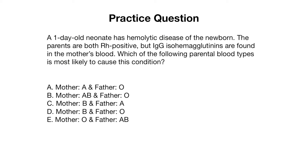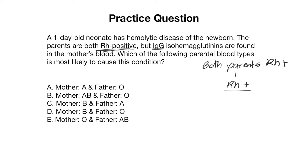Let's do a practice question. A one-day-old neonate has hemolytic disease of the newborn. The parents are both RH positive, but IgG is found in the mother's blood. Which of the following parental blood types is most likely to cause this condition? Since both parents are RH positive, the baby is going to be RH positive — so we are not dealing with RH incompatibility. Therefore we're dealing with ABO incompatibility, and we know that mom must be of blood type O.